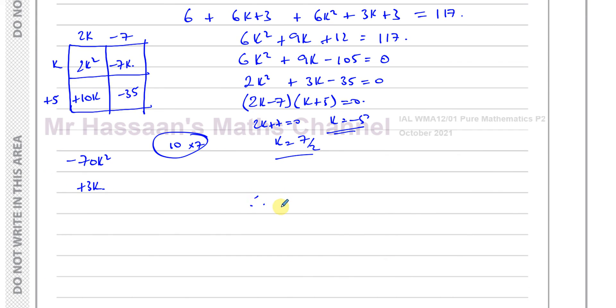K is a positive constant. So we can say, therefore, K must equal 7 over 2, because it says K is positive.